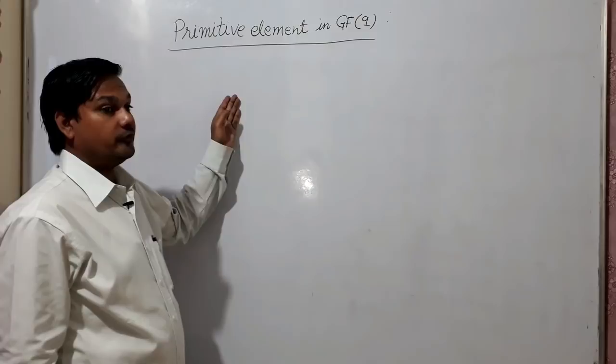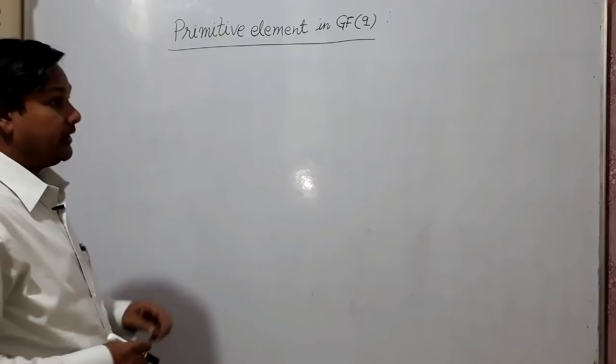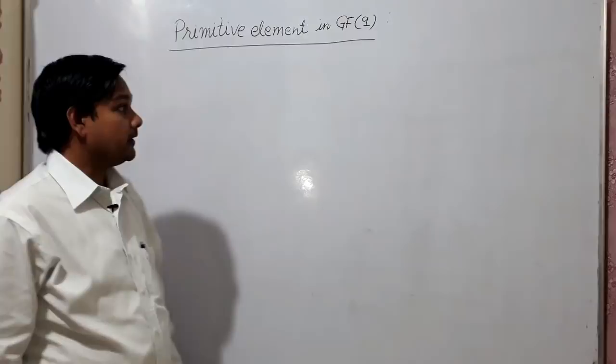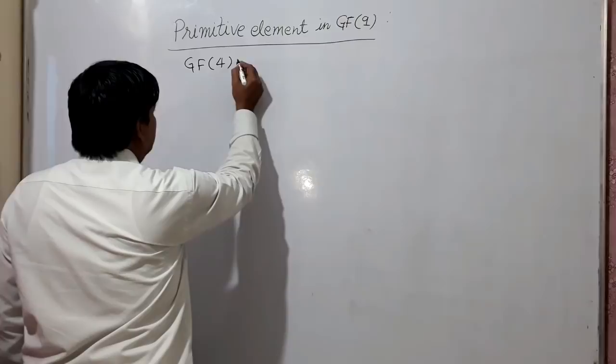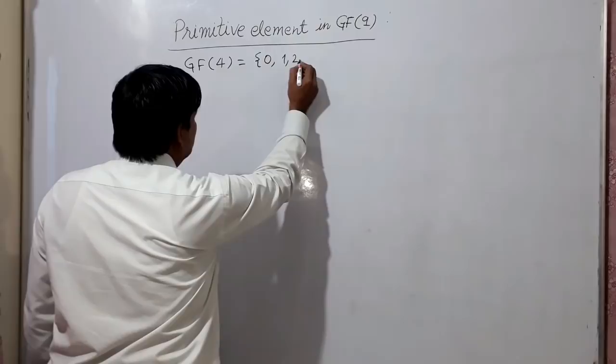We have seen GF2, GF3, GF5, and GF7, but now we want to take up the table of GF4. In GF4, there will be 4 elements: 0, 1, 2, and 3.